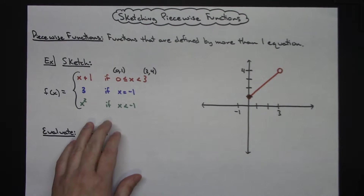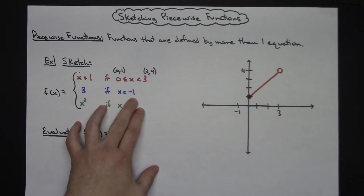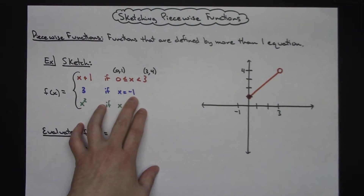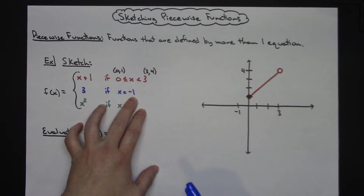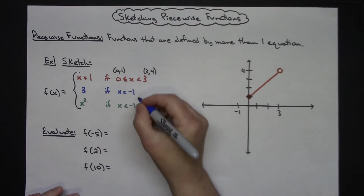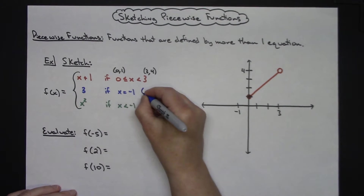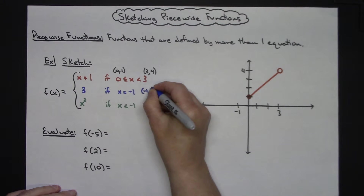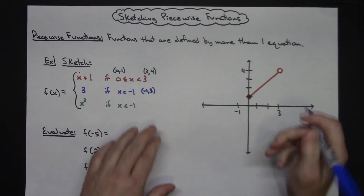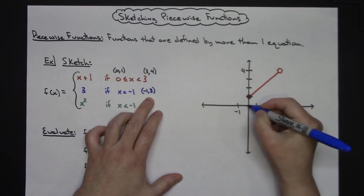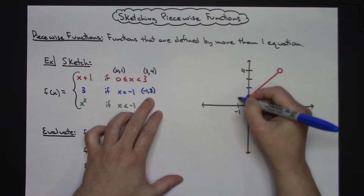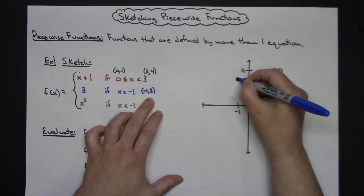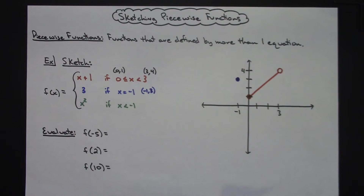For the middle piece, when x is equal to negative 1, y is 3. That makes the ordered pair (−1, 3), and since it's defined only at that single point, it's just a closed dot on the graph at (−1, 3). That's the only portion that is blue.